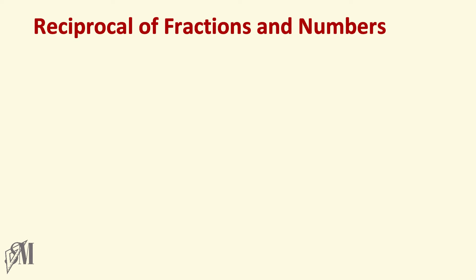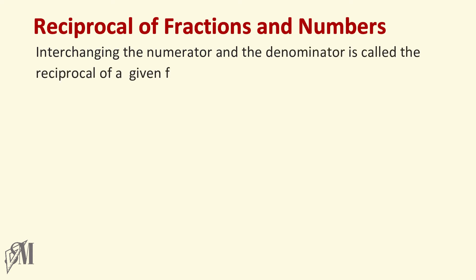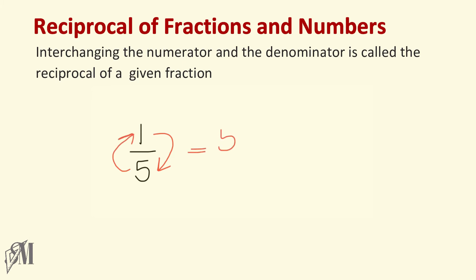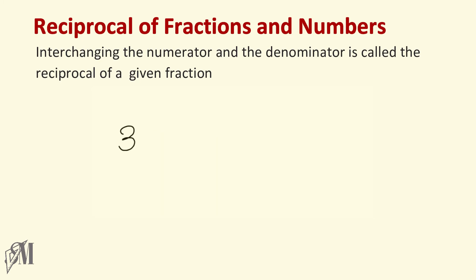Remember, reciprocal of a number or a fraction means interchanging the numerator and the denominator of a fraction. Let's have a look at some examples. Here, one over five — to get the reciprocal of this, what we do is interchange one and five. That is, we bring one down and take five up, so our answer becomes five over one. We know when the denominator is one, the answer is five itself.